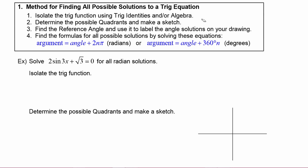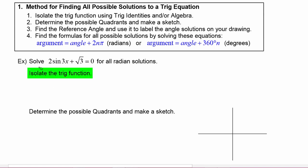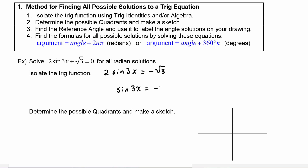Let's see how this works in the first example, where we have to solve 2 sine of 3x plus radical 3 equals 0 for all radian solutions. In step one we isolate the trig function. We subtract radical 3 from both sides to get 2 sine of 3x equals negative radical 3, then divide both sides by 2 to get sine of 3x equals negative radical 3 over 2.